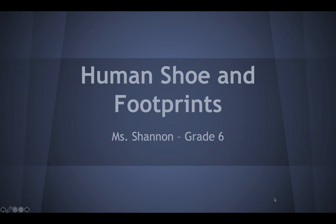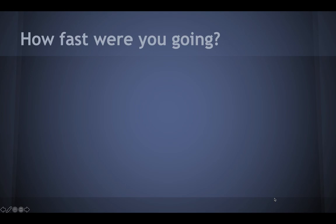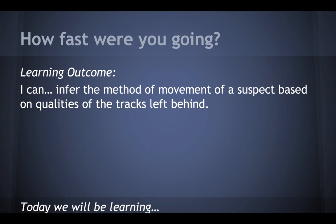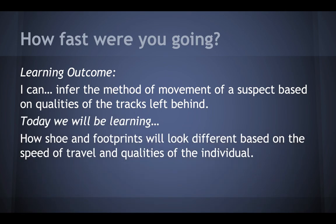So, human shoe and footprints. What we're mainly doing today is determining how fast somebody was going, and then tomorrow we're going to talk more about direction of travel. The learning outcome is: I can infer the method of movement of a suspect based on the qualities of the tracks left behind. This whole entire unit is about making inferences — we're gathering evidence and trying to make a prediction or an inference, like reading between the lines, about what happened, even though we don't have video evidence of it.